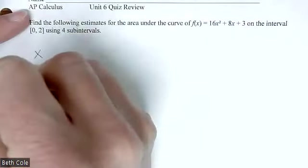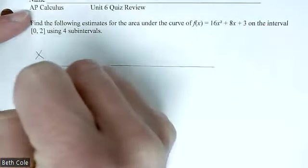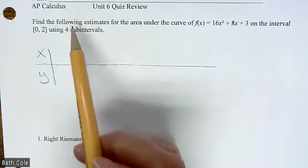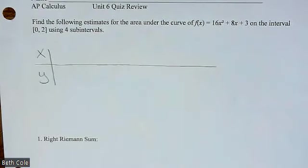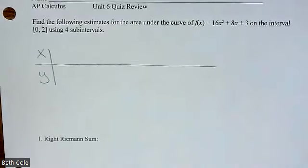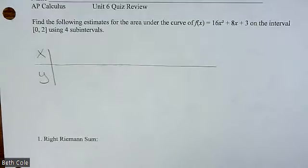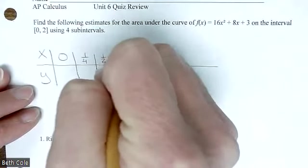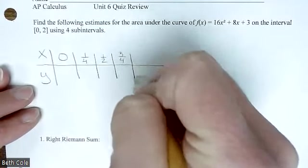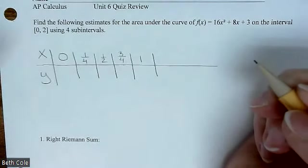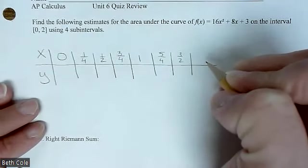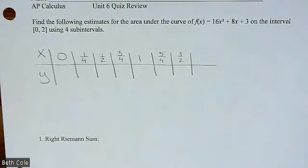First, we need to figure out how many numbers we need to put on our table. So from 0 to 2 is two units. If you divide that into four sub-intervals, 2 divided by 4 would be 0.5, that would be a half. However, we can't count by halves. We're actually going to have to count by fourths. And why would I need to break it down even smaller than the halves? Which sum is causing us to have to do that?